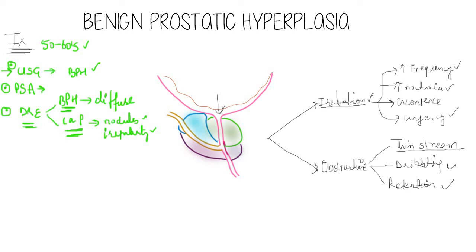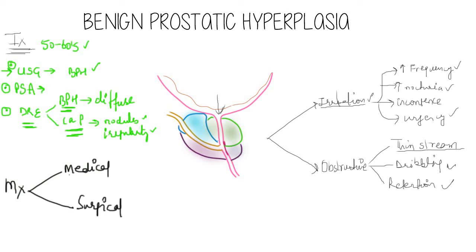For management of benign prostatic hyperplasia there are two options: medical management and surgical management. When the patient comes for the first time, you begin with medical management and observe whether the patient is responding.